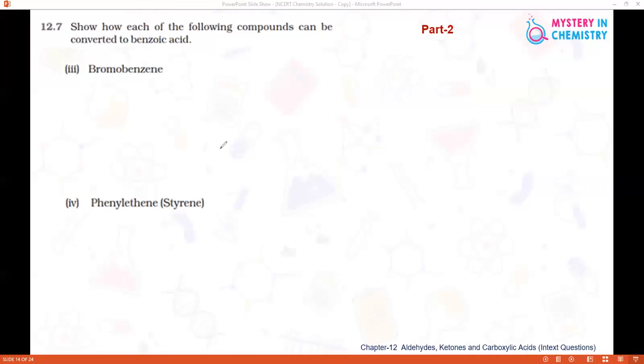Question number 12.7: Show how each of the following compounds can be converted to benzoic acid. In the second part we are doing the same question 12.7, and here again we are taking care of all the instructions for conversion reactions.